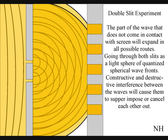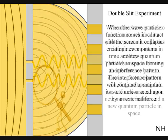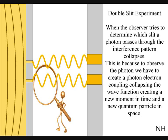When the observer turns on a detector to determine which slit a photon passes through, the interference pattern collapses. At that moment in time, the interference pattern disappears.